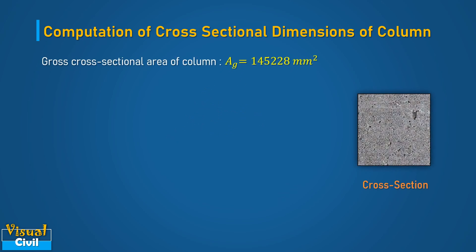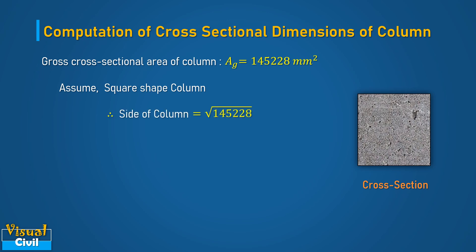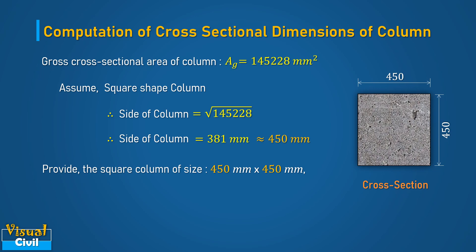Let us assume a square shape column. Therefore, the side of the column is equal to 381 mm. Rounding off to a higher value for the safer side, take the side of the column equal to 450 mm. Hence, provide the square column of size 450 mm × 450 mm.